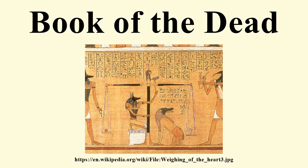For most of the history of the Book of the Dead there was no defined order or structure. It is only from the Saite period onwards that there is a defined order. The Books of the Dead from the Saite period tend to organize the chapters into four sections: Chapters 1 to 16, where the deceased enters the tomb, descends to the underworld, and the body regains its powers of movement and speech; Chapters 17 to 63, explanation of the mythic origin of the gods and places, where the deceased are made to live again, reborn with the morning sun; Chapters 64 to 129, where the deceased travels across the sky in the sun barque as one of the blessed dead; and in the evening travels to the underworld to appear before Osiris. Chapters 130 to 189, having been vindicated, the deceased assumes power in the universe as one of the gods, including chapters on protective amulets, provision of food, and important places.